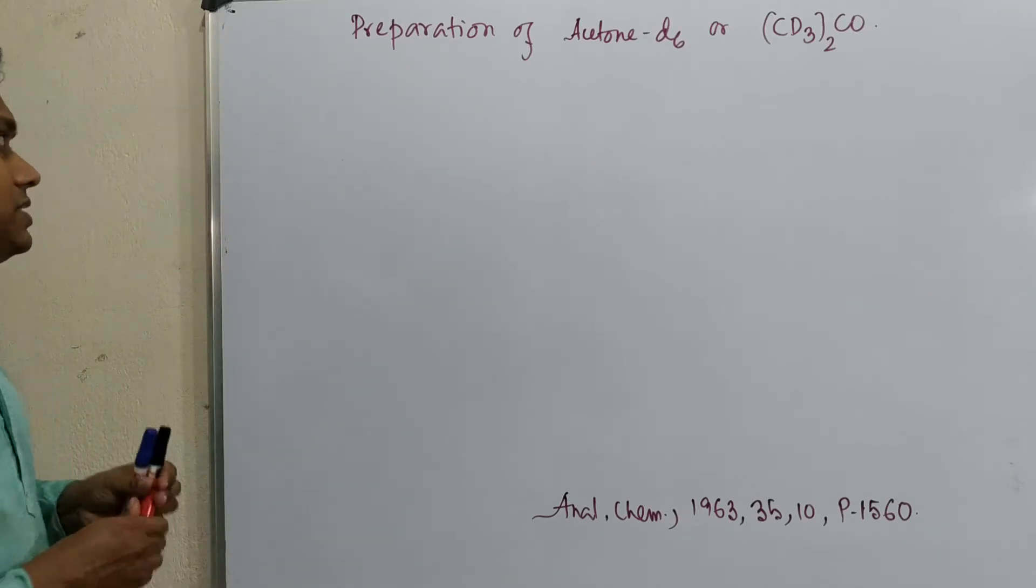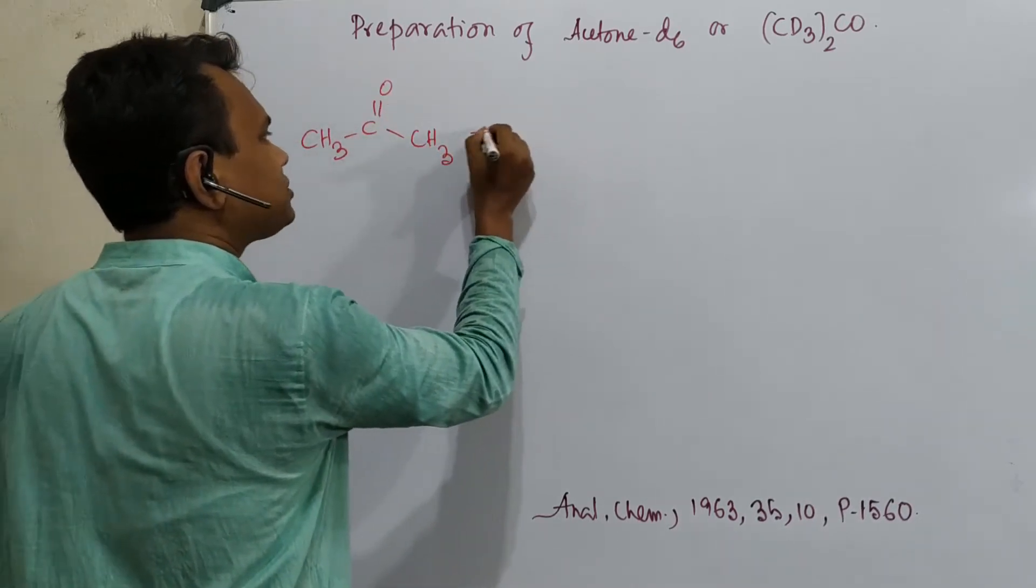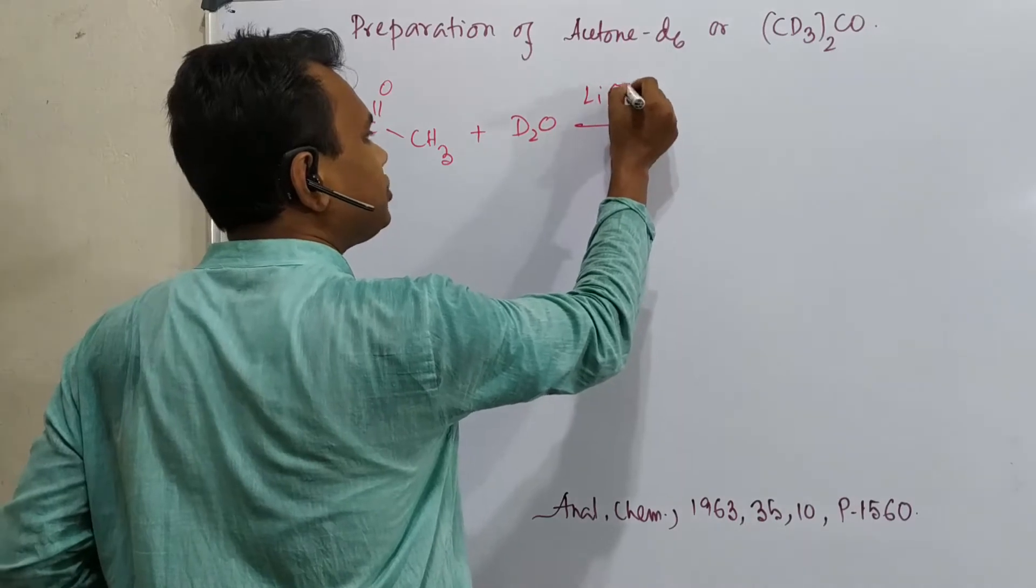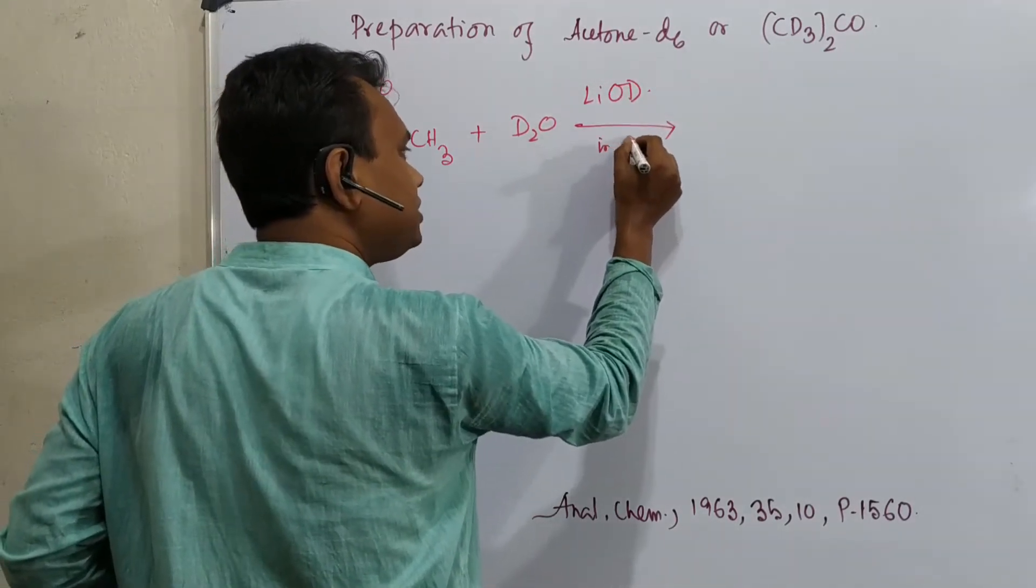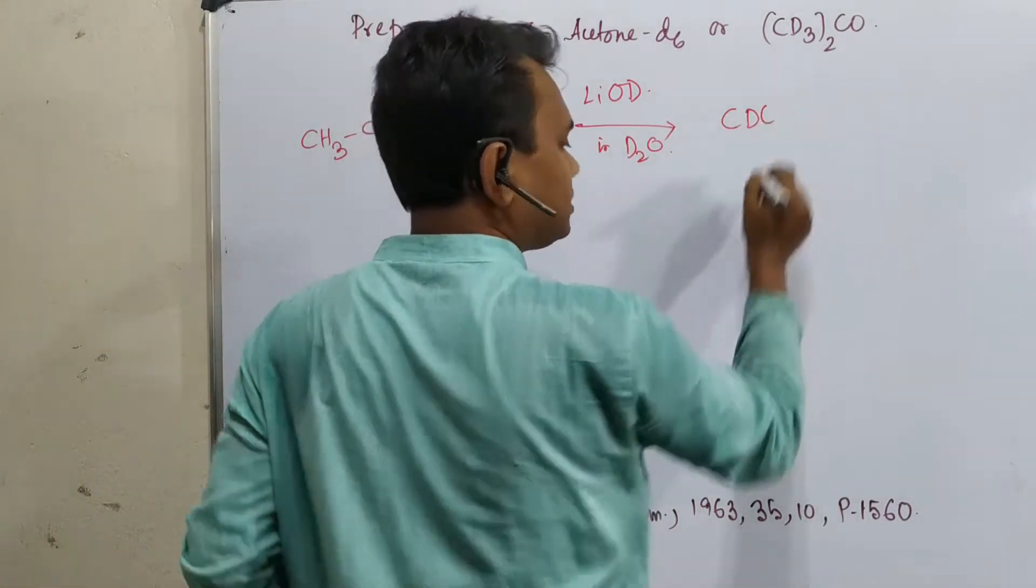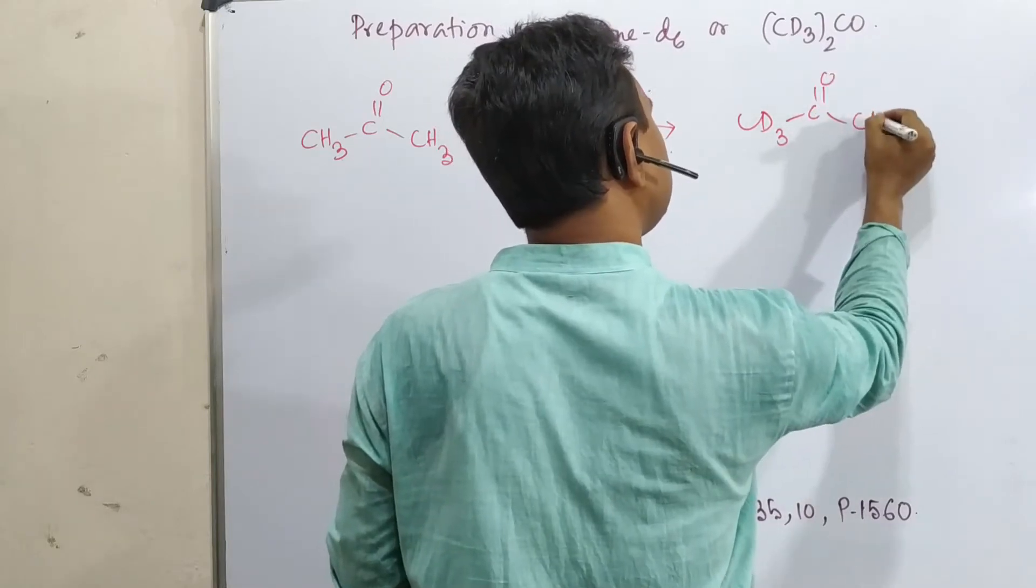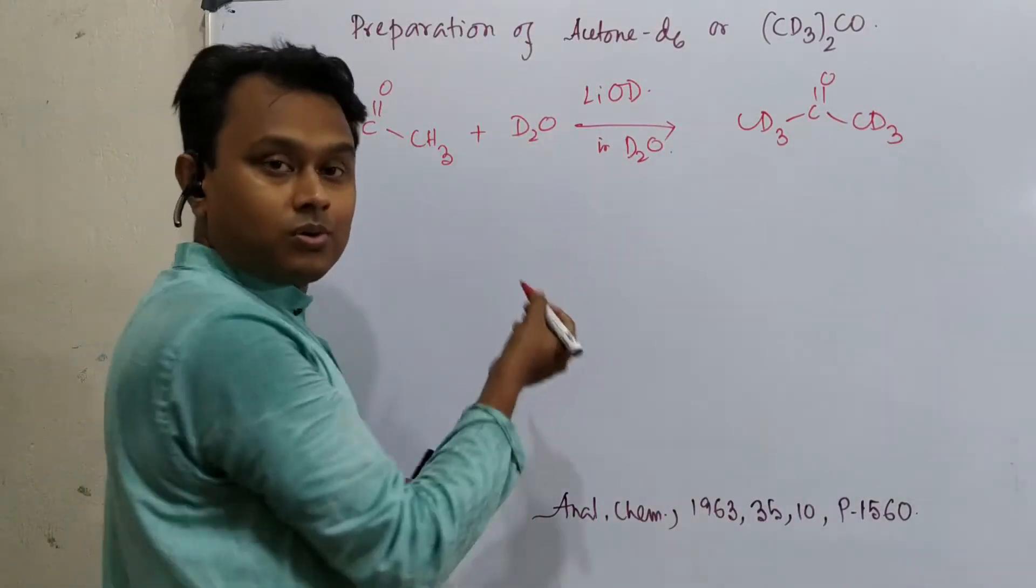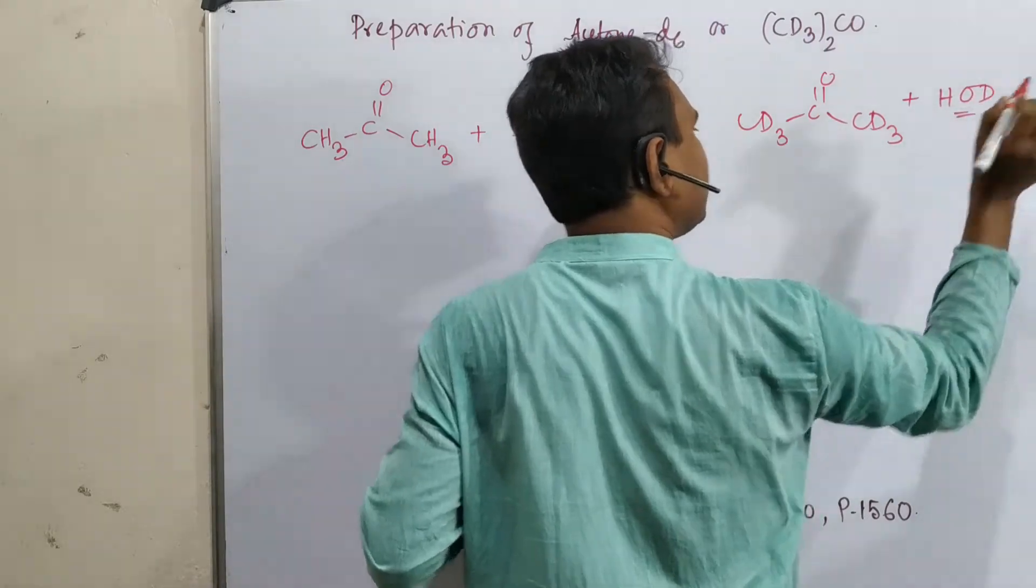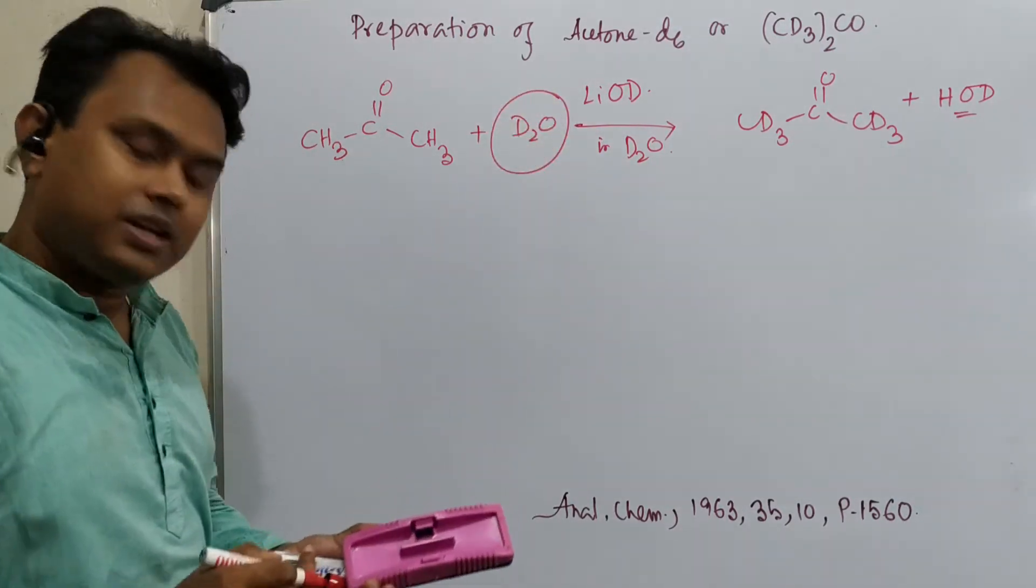The preparation of acetone D6 is relatively simple. It is prepared from its parent protium derivative, that is acetone, in presence of D2O and a base, lithium dioxide. It reacts and ultimately produces CD3-CO-CD3 and HOD. There may be very little water preparation because we are taking almost pure D2O for this reaction.